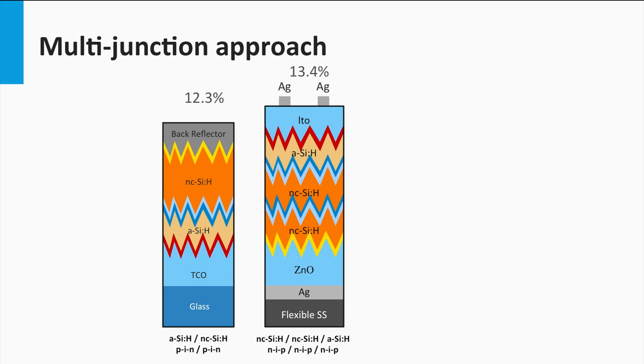Secondly, intermediate reflector layers are being used as a tool to manage the light management between the cells, like indicated by the blue layers. The top junction and bottom junctions are separated with a low reflective index material. Due to the large refractive index mismatch between this intermediate reflector layer and the top cell, more light is reflected back into the top cell.